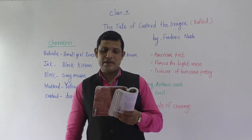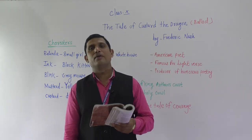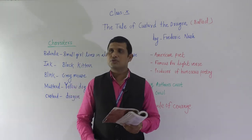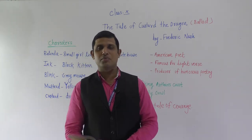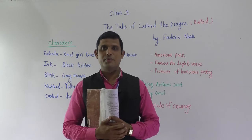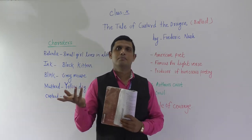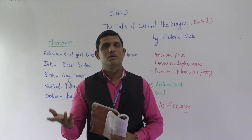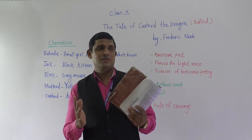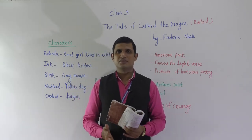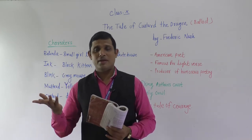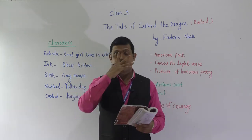'And a realio trulio little pet dragon' — it is actually not easy to digest that a dragon can be somebody's pet. A tiger can be someone's pet — we have seen some people have big tigers or lions as pets — but a dragon as a pet is something like a hyperbole; we can't see it in reality. But the poet has poetic license and can do anything in the poem.